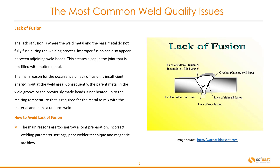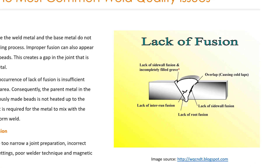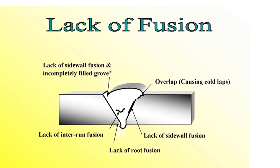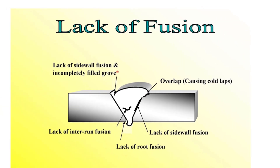To avoid lack of fusion, the main reasons are too narrow a joint preparation and incorrect welding parameter settings, poor weld technique, and magnetic arc blow. Lack of fusion is shown here and you can see clearly that there are a number of areas where lack of fusion could occur.